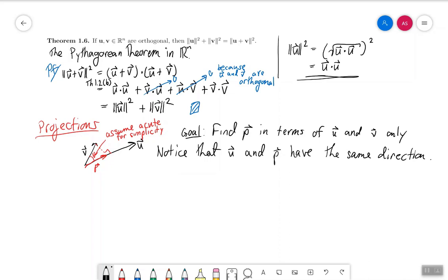Therefore, the normalizing vector, or the unit vector in their directions, are the same. So therefore, u divided by the length of u is p divided by the length of p. Or in other words, if I solve for p, we get that p is the length of p times u over the length of u.